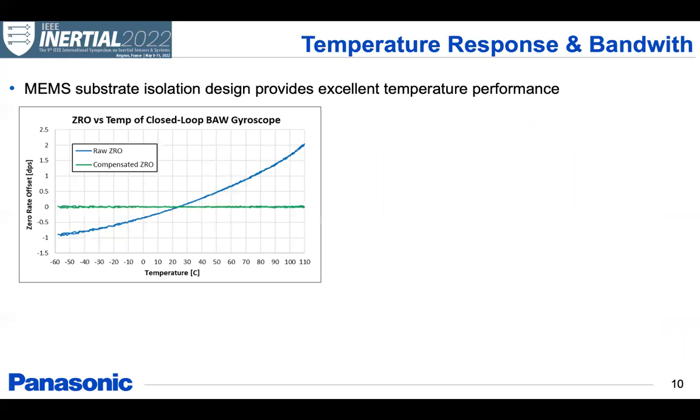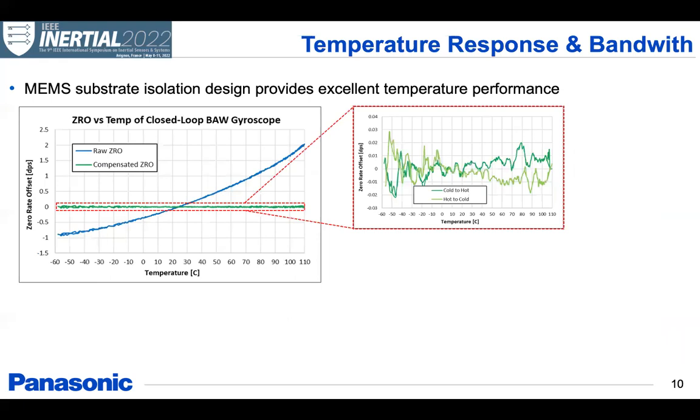In this slide, we have the very good temperature response we get out of this part. So here in this plot we see the uncompensated response and then the compensated ZRO, zero rate output, after calibration with our back-end digital architecture. Then zooming in, in the range of minus 60 to 110 degrees C, we get around 0.05 degrees per second of maximum deviation from zero.